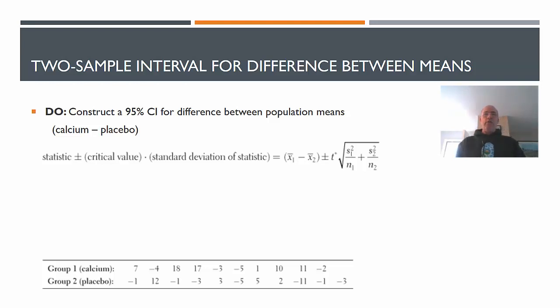Keep in mind how confidence intervals work. We have statistic plus or minus critical value times the standard deviation of the statistic. The formula is here. We're going to subtract those means, plus or minus T-star. And there's that standard error formula lurking around again. So plugging it all in, we have this.